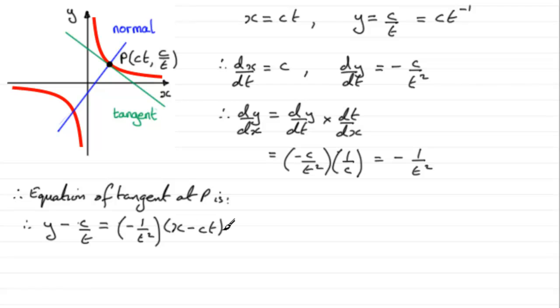Now we could leave it like this, or we could clean it up, we could get rid of the fractions here. And if I'm going to do that, I'd multiply both sides by t squared. And if I do that, I'm going to get t squared y. For this term here, I'd just be left with minus ct.